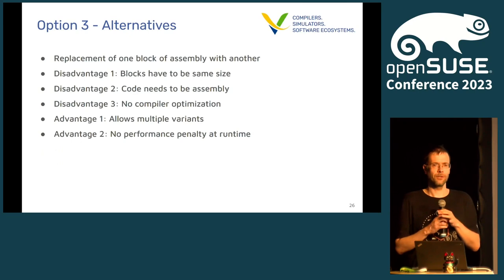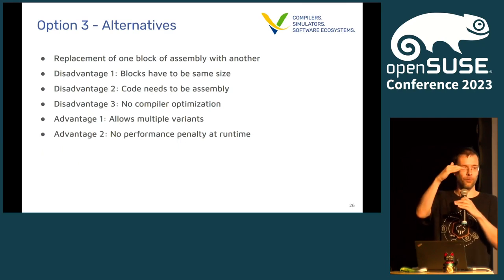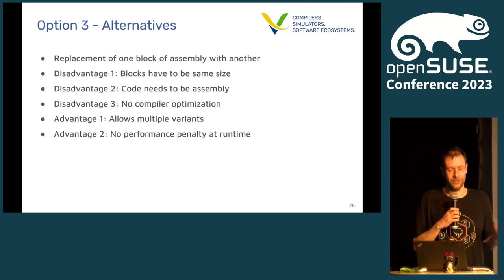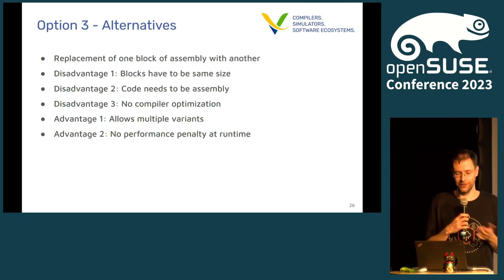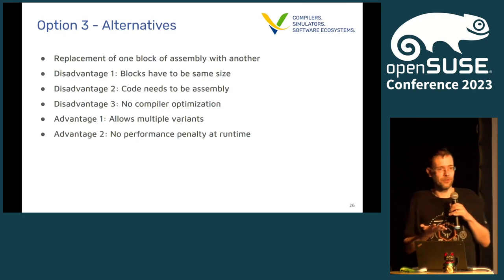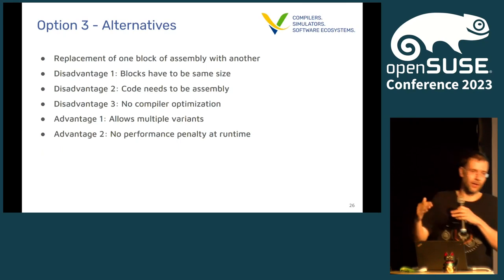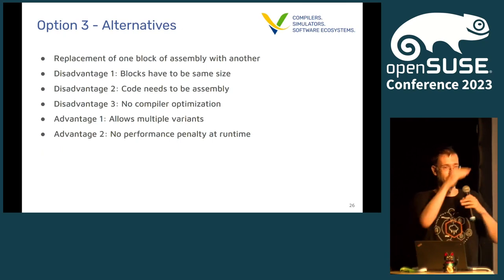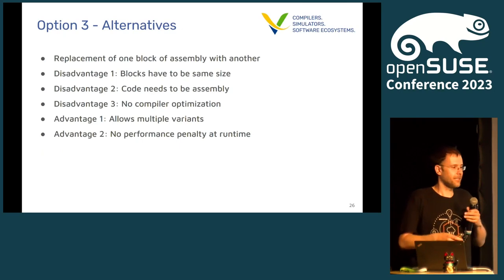Option three, which is probably the most versatile, is the so-called alternatives, where you replace one block of assembly code with a different block of assembly code. The disadvantage is that everything needs to be in assembly, and the blocks need to have the same size, so you add NOP instructions. There's also no compiler optimization since you hand-write your own assembly. But the big advantage is that there is really no performance penalty at runtime, because you're removing one piece of code and moving in a different piece. It also allows multiple variants — you have one block of code and can patch in this one, or this one, or this one — essentially unlimited variants.